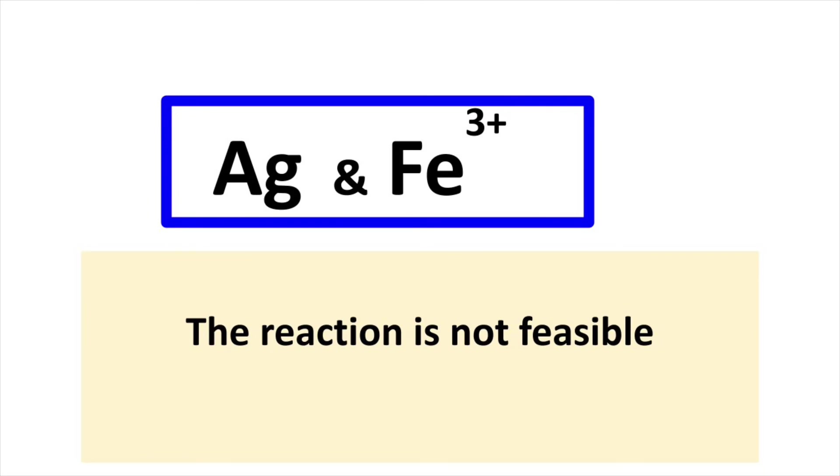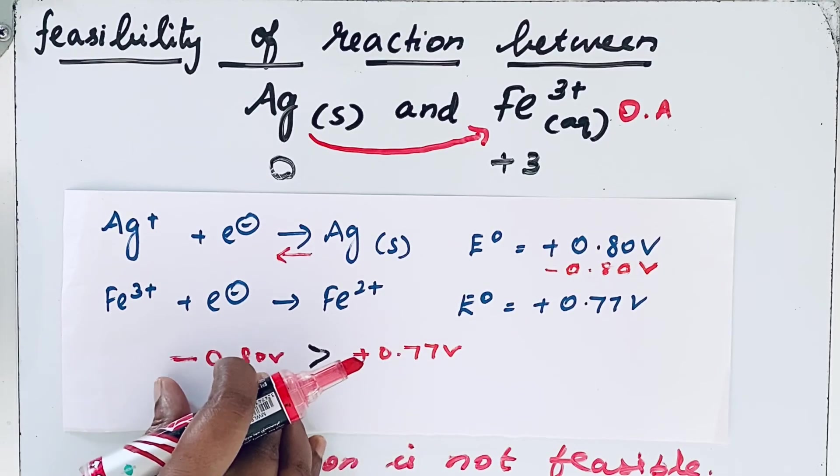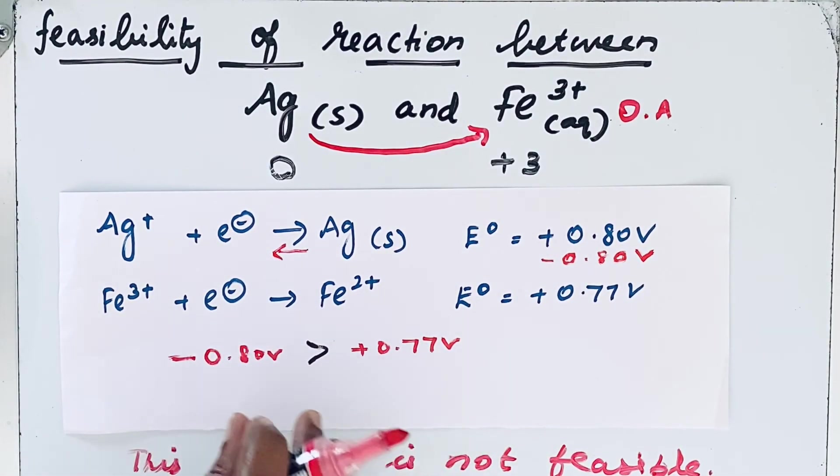Why is it not feasible? Because the negative electrode potential is not greater than the positive electrode potential. So it means the oxidizing agent is not strong enough here.